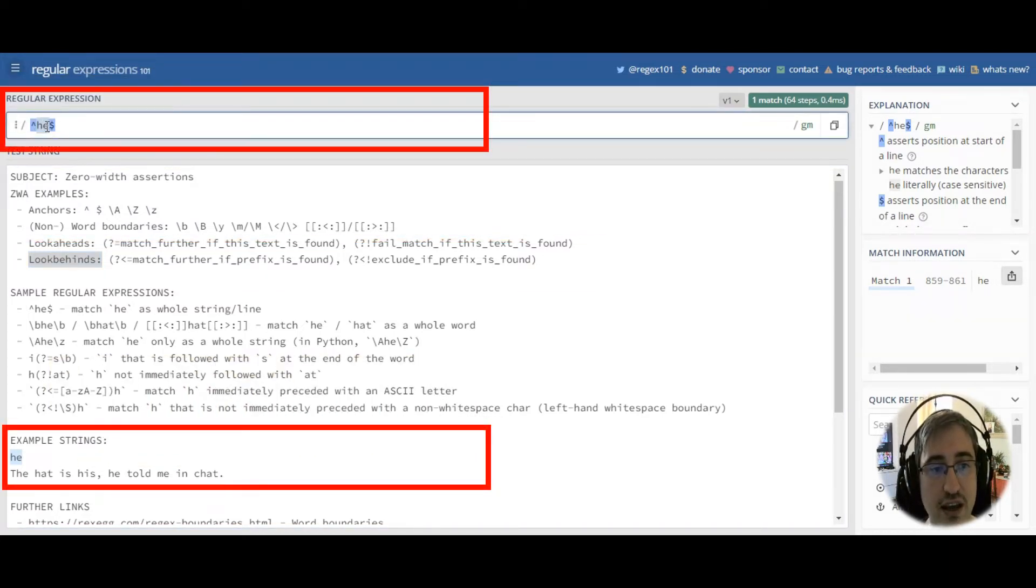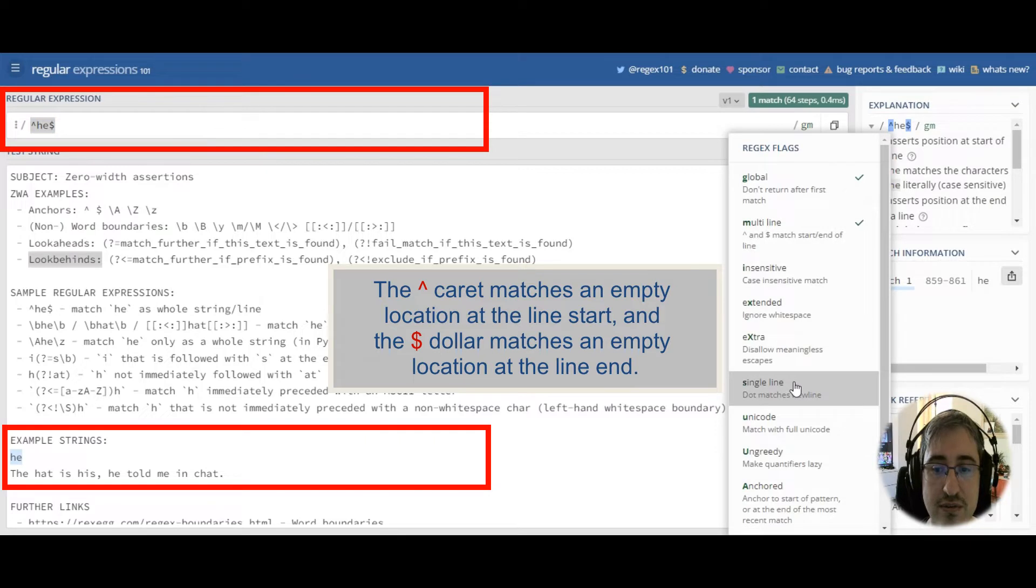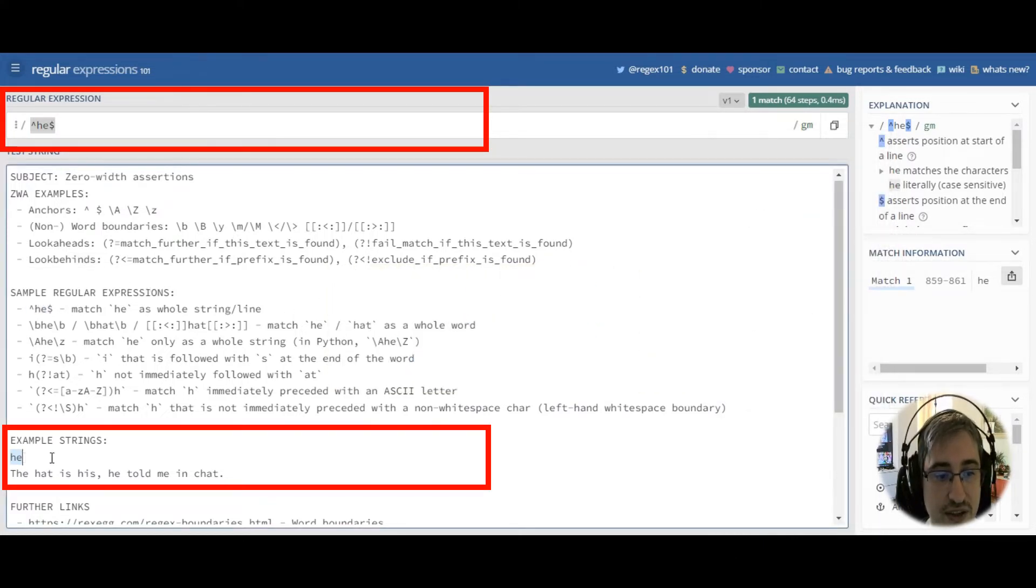For example, we want to match he as a whole line. Here we are using the M option, M flag, which stands for multi-line. That's why the caret symbol and the dollar symbol match the start and end of any line correspondingly. So, he matches a whole line he, and you can see they match here.